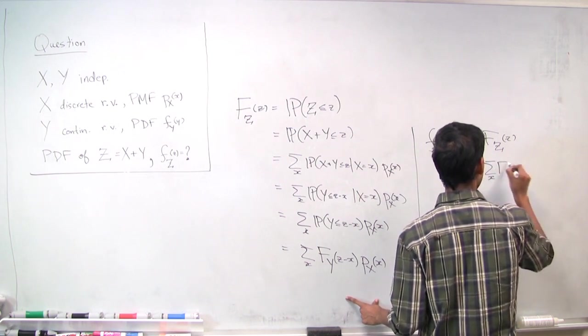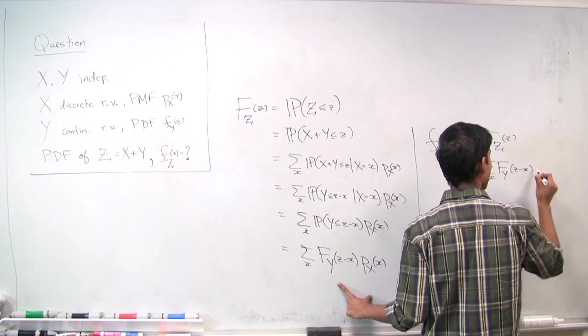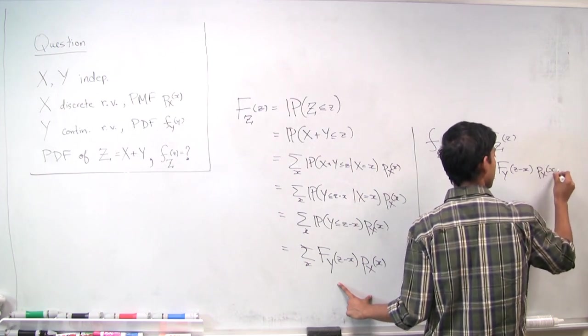It's the sum over x, f_y of z minus x, p_x.